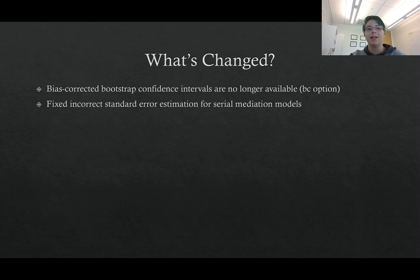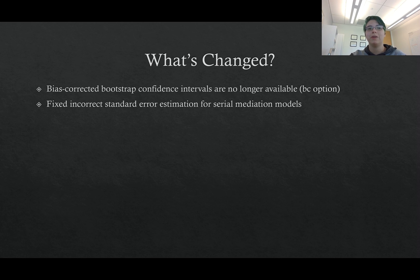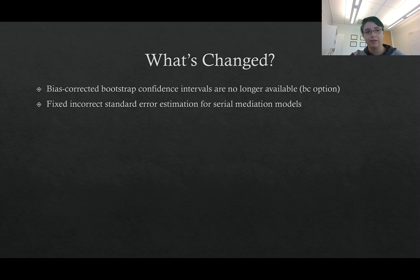A couple of things have changed in this new version. I have actually removed the bias-corrected bootstrap confidence interval. Research overwhelmingly shows that this method has inflated Type I error rates, meaning that it's giving false positives. Given the state of the world in psychology and behavioral science research, it just didn't seem right to me to include an option that we know performs poorly in this manner. So the bias-corrected bootstrap confidence interval is gone. The percentile bootstrap confidence interval and the Monte Carlo confidence interval are still available. The percentile bootstrap confidence interval is the default, and both of those methods have been shown to have much better and more accurate Type I error rates. So if you're used to using the bias-corrected, you can just switch to the default.